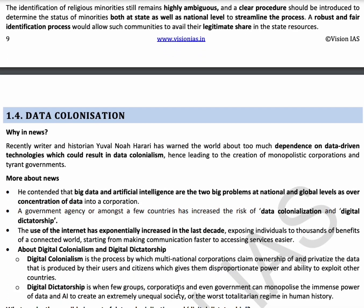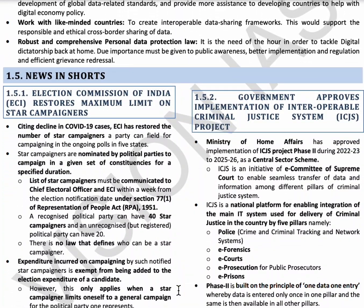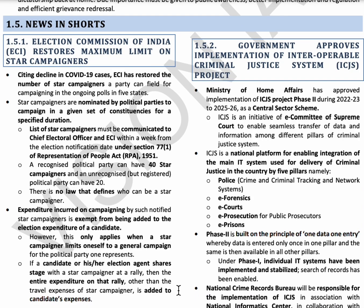The next topic is the Election Commission of India restoring the maximum limit on star campaigners. Star campaigners are famous political figures nominated by their parties to campaign during elections. The maximum limit of star campaigners for a recognized political party is 40, and for an unrecognized political party it is 20. This concept is mentioned under Section 77(1) of the Representation of the People Act, 1951.